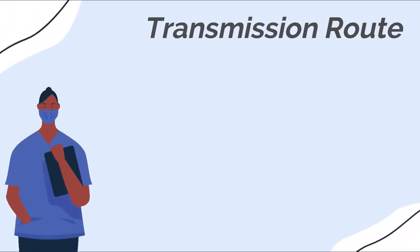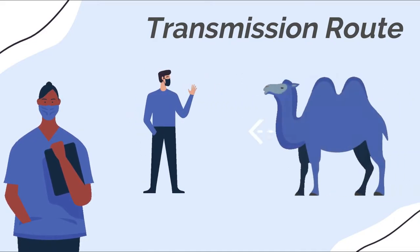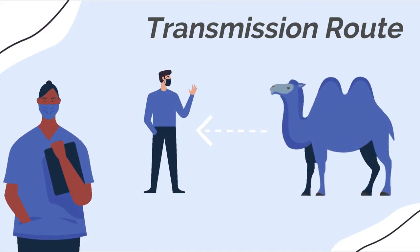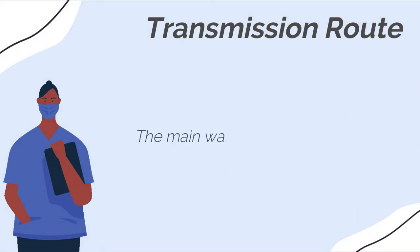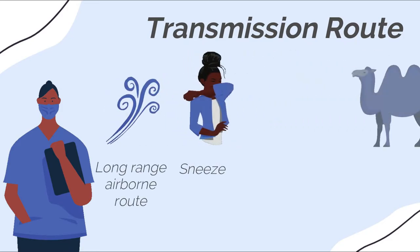MERS-CoV is a zoonotic virus, which means it's a virus that is transmitted between animals and people. The main ways of transmission are long-range airborne route, sneeze, dromedary camels and short-range airborne route.